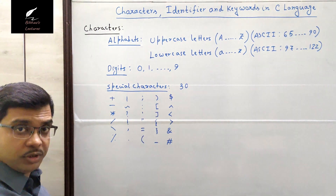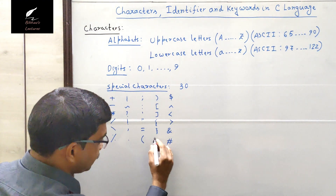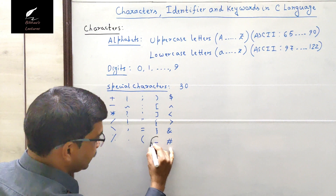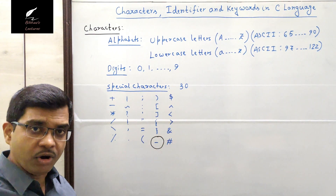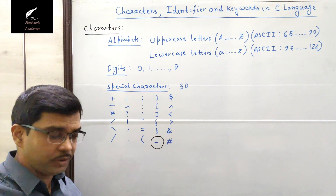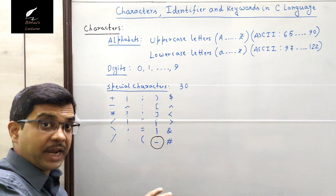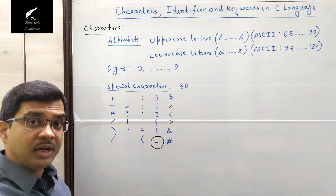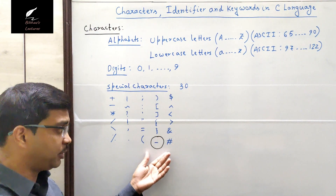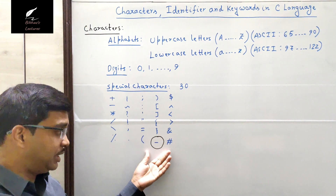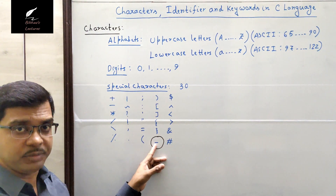However, all 30 special characters will not be used inside a variable name. Only one special character — the underscore — can be used inside a variable name or function name. Whenever you are giving the name of a variable or function, only the underscore symbol can be used. The other special characters are available in C language and you can use them for other purposes, but not for naming a variable or function.